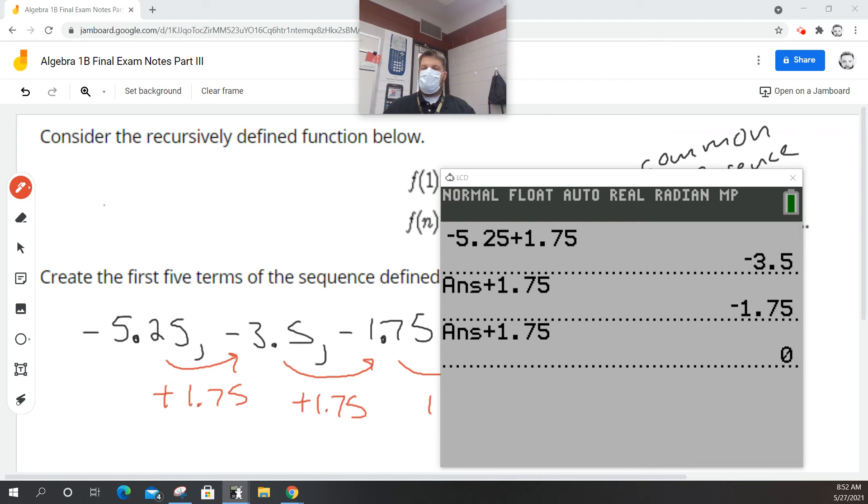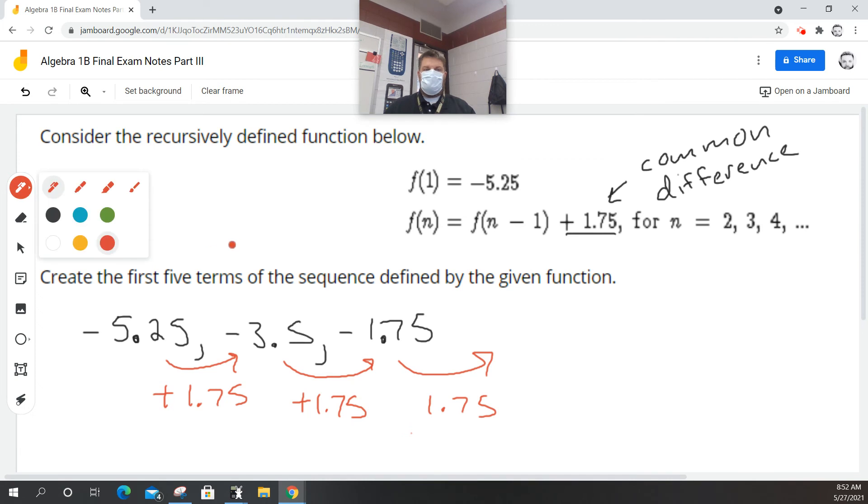Well, 1.75 plus negative 1.75, guess what that is? That's 0. So we're going to do 0.